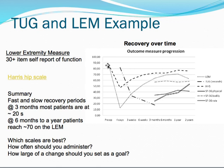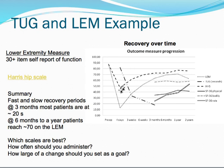We can see the Harris-HIP score here in the solid dots, the darker score, and then we see the LEM, or the Lower Extremity Measure, here in the small dots. What you immediately notice is that there's much greater change in the LEM, especially in the acute and subacute phases of care when we would be wanting to use the instrument. In the Harris-HIP score, there's very little change — it's pretty flat, really, after three weeks.